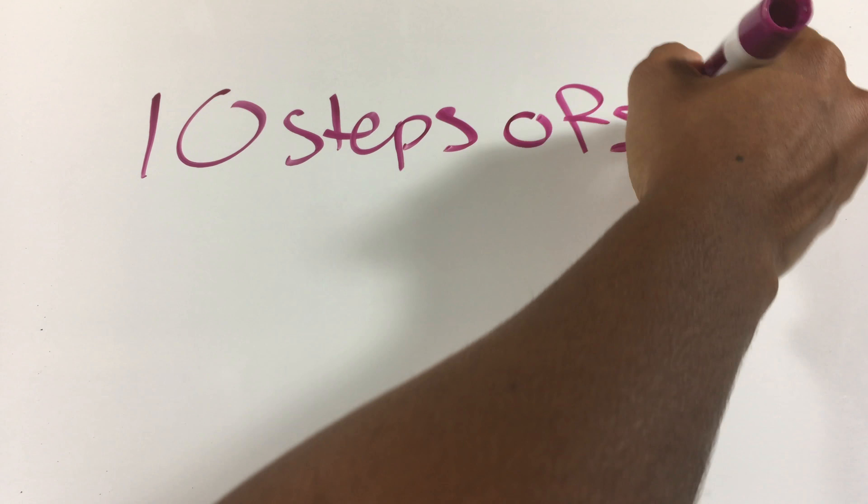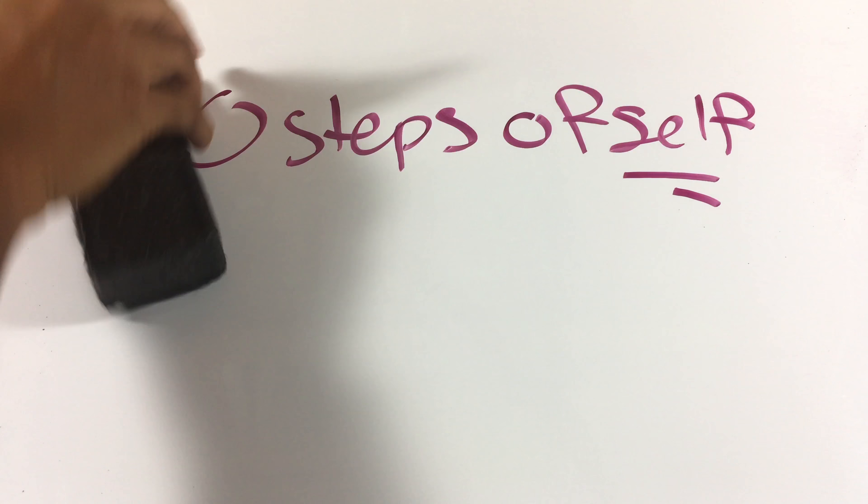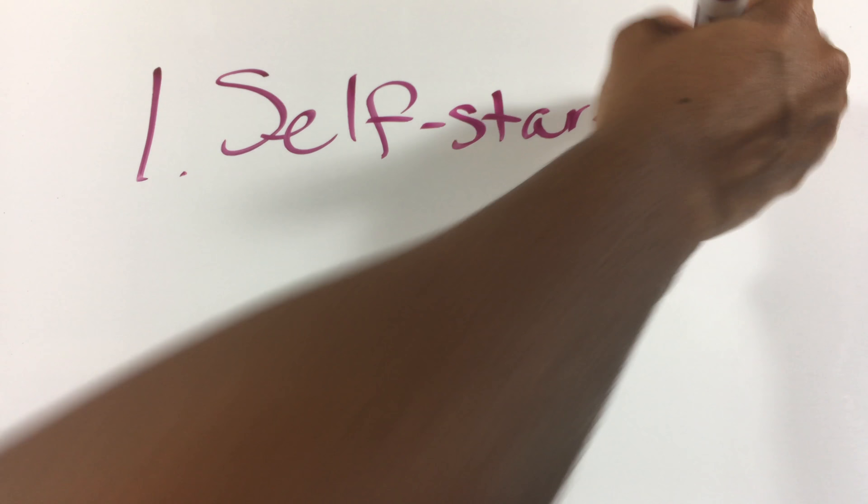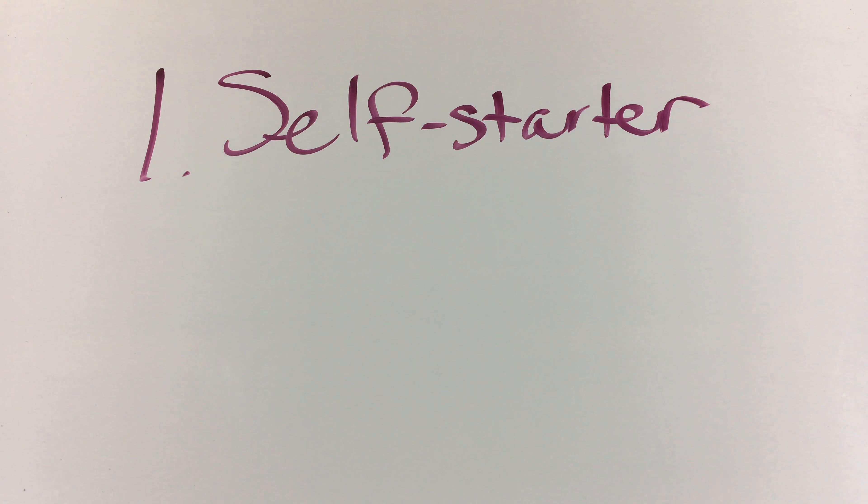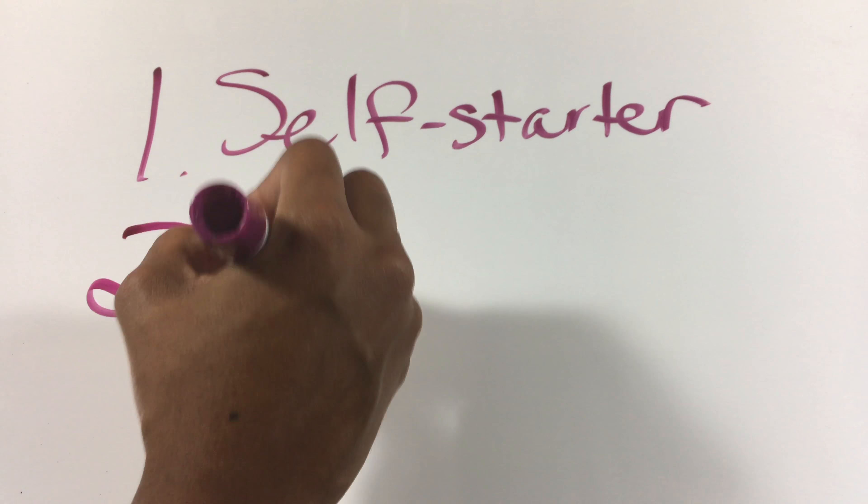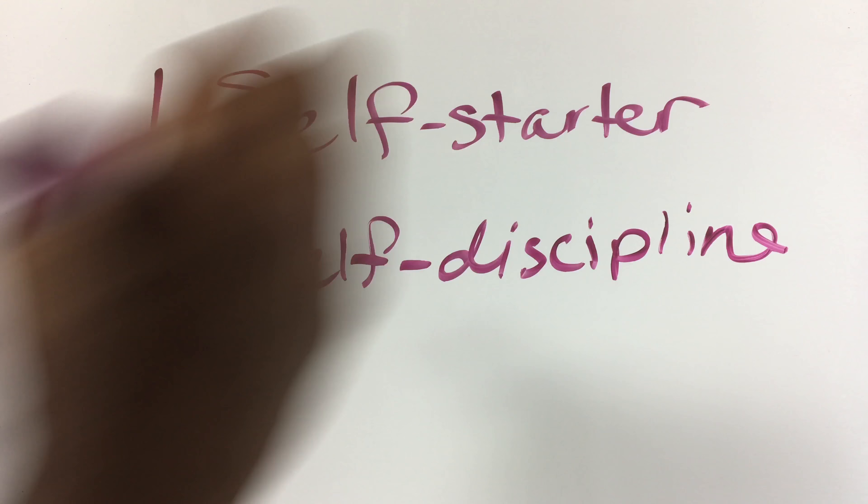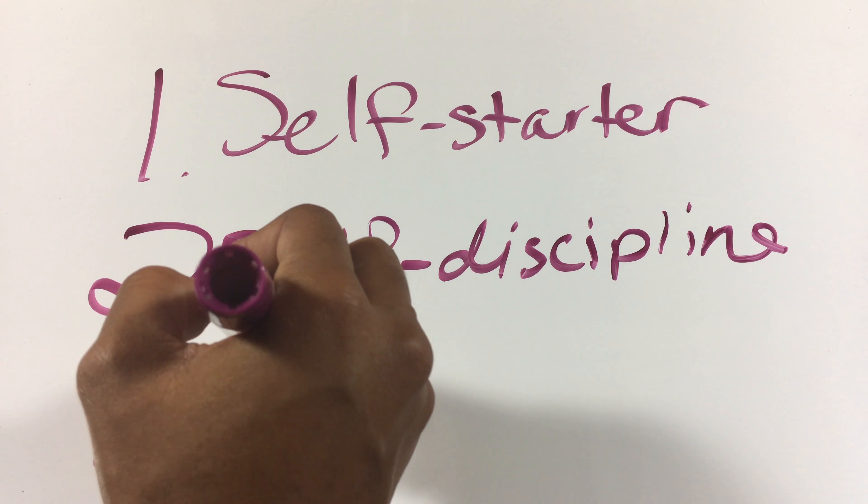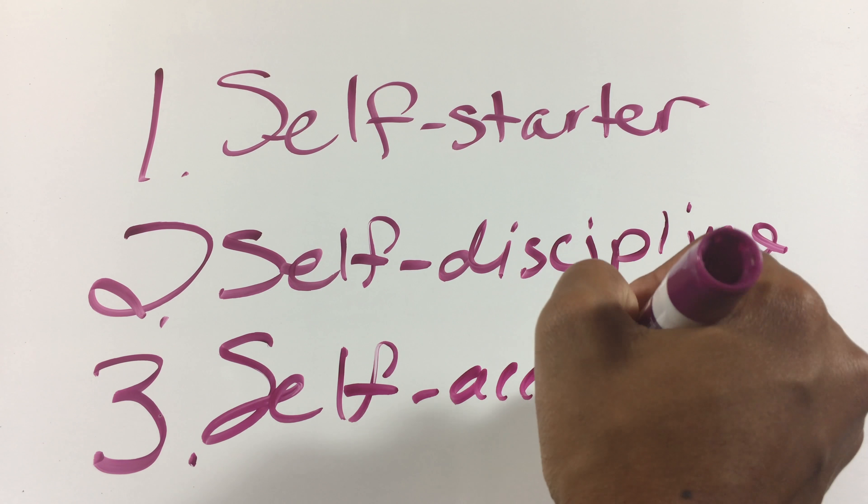Today I'm going to talk about the 10 steps of self. You've got to be a self-starter - if you're not a self-starter nothing's going to be done. You also have to have the discipline to be a starter.